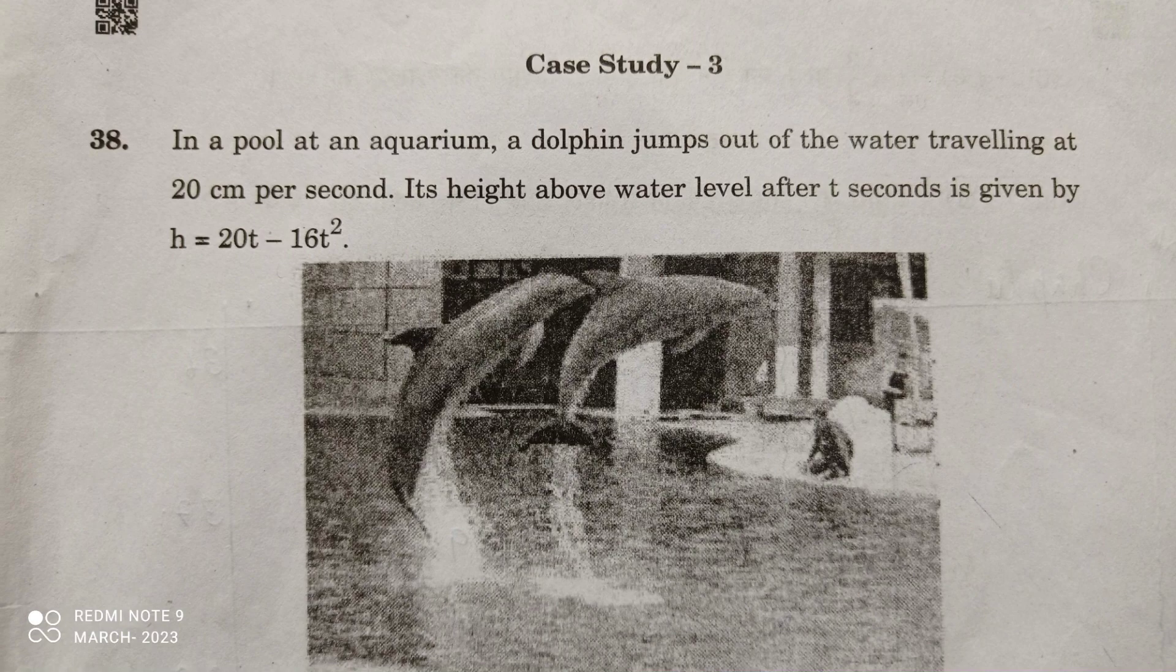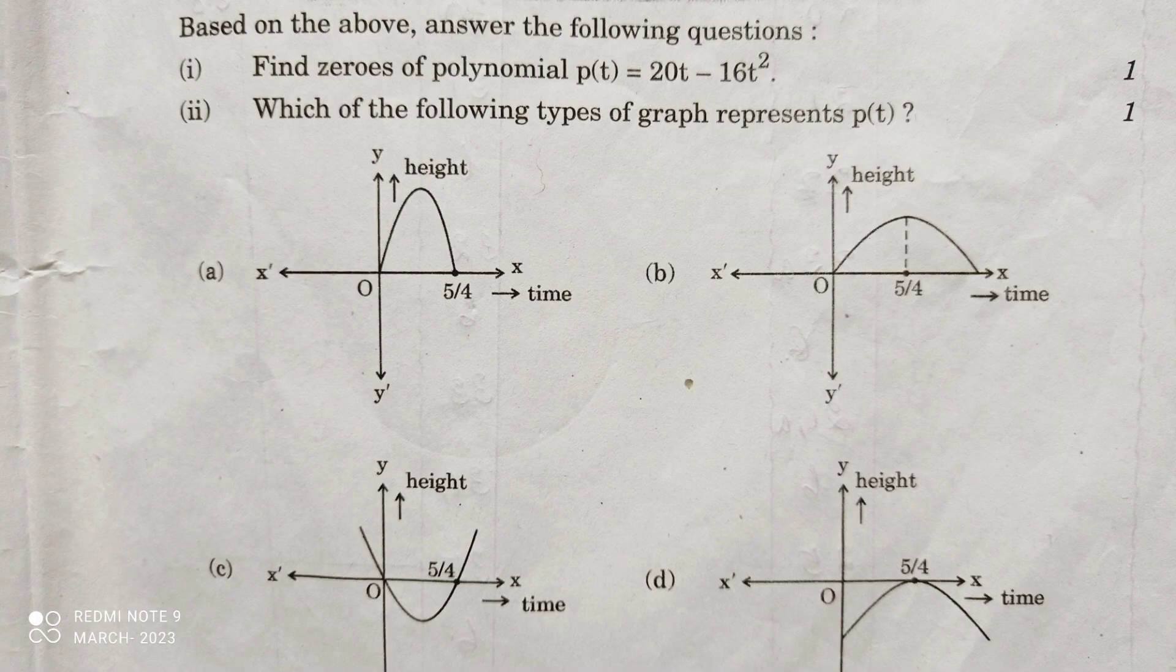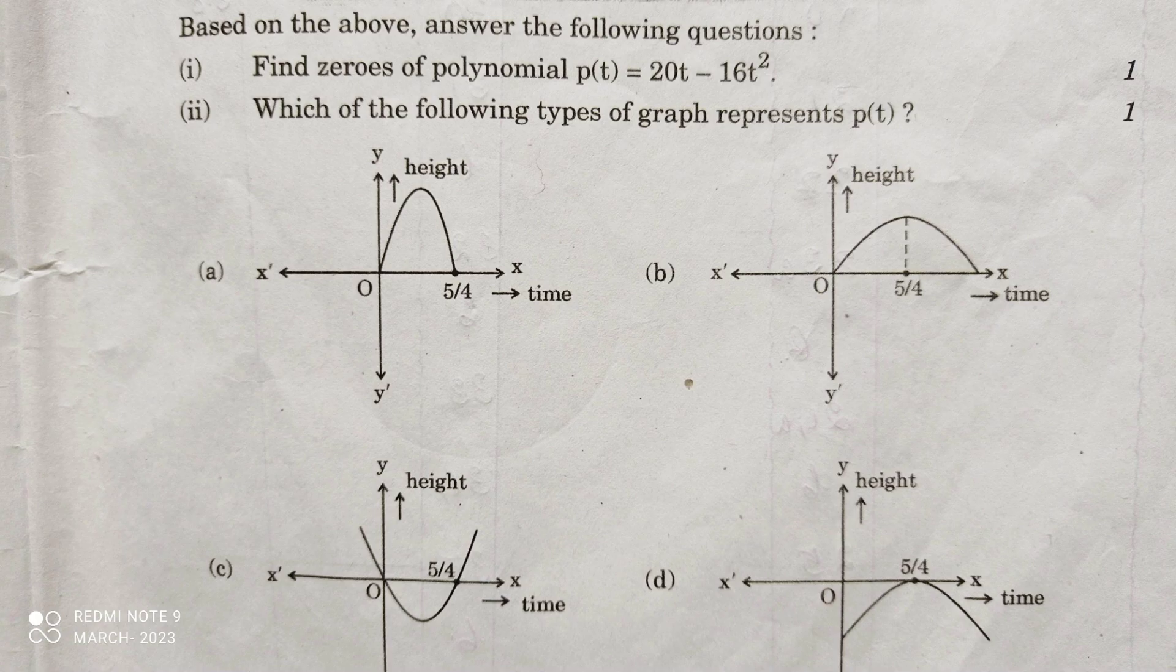The question is, in a pool at an aquarium, a dolphin jumps out of the water traveling at 20 cm per second. Its height above water level after t seconds is given by h = 20t - 16t².